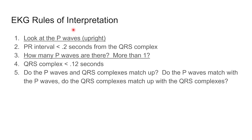Here's a quick look at our EKG rules of interpretation. Look at the P waves — we want to make sure they're upright. Check the PR interval: is it less than 0.2 seconds from the QRS complex? For some junctional rhythms, you may not even identify a P wave, so you can't measure the PR interval. How many P waves are there? For the QRS complex, is it less than 0.12 seconds? Do the P waves and QRS complexes match up? We can still measure QRS complexes to each other off the R wave.